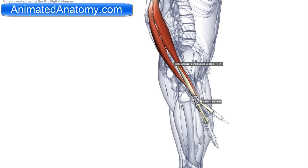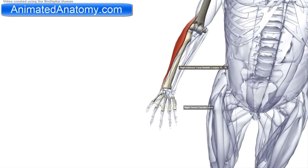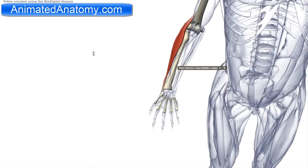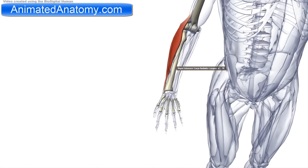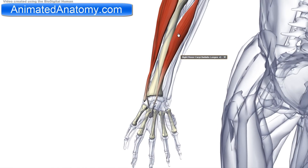Looking at it from here, you can see it's inserting on the other side, so when it contracts it's going to extend the wrist joint — pulling the hand up. But also, if it contracts it's going to pull the wrist laterally, meaning it abducts the hand at the wrist joint. The muscle that antagonizes this muscle is the flexor carpi radialis muscle, shown here.